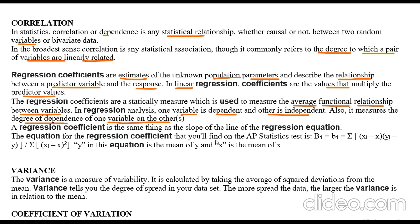The equation for the regression coefficient is: b1 = summation of (xi − x̄)(yi − ȳ) divided by summation of (xi − x̄)², where ȳ is the mean of y and x̄ is the mean of x.